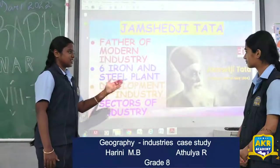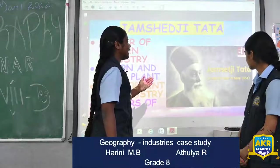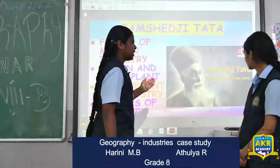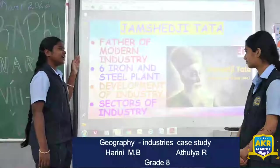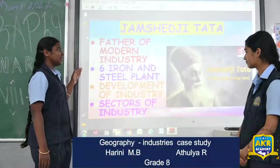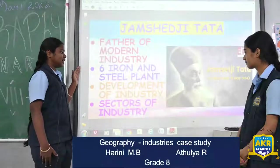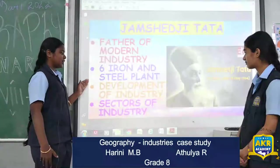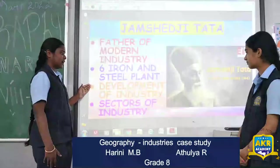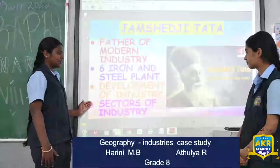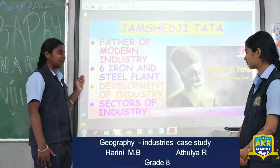He is Jamshedji Tata. He was born on 13 March 1839 and he died on 9 May 1904. He is said to be the father of modern industry. He gave the idea for the iron and steel plant and the government executed it. Development of industry boosted the development of the country. Nowadays many sectors of industry also somewhat depend on the iron and steel plant.